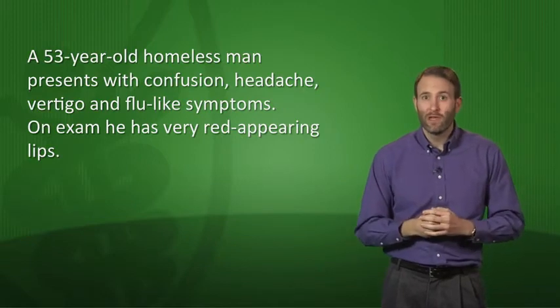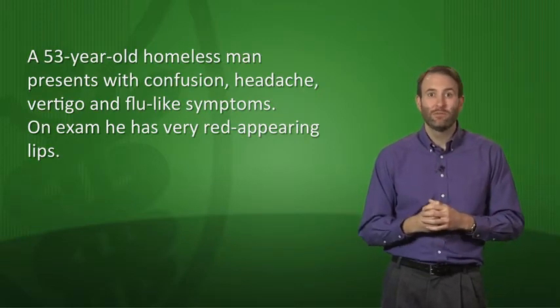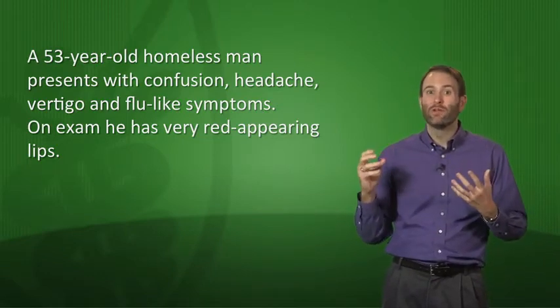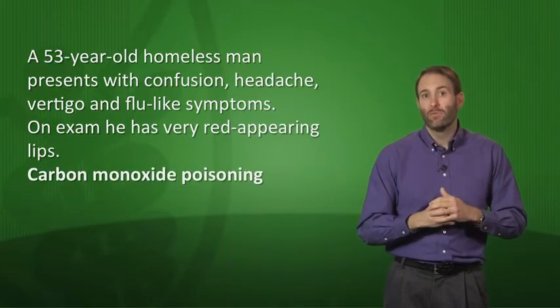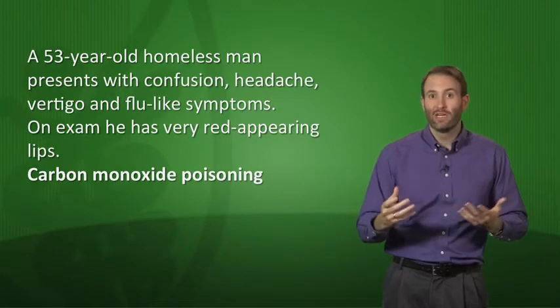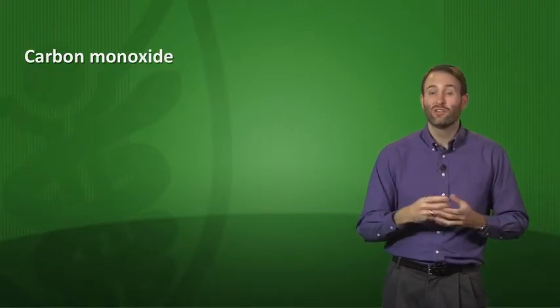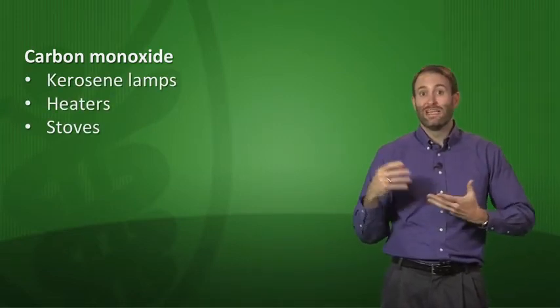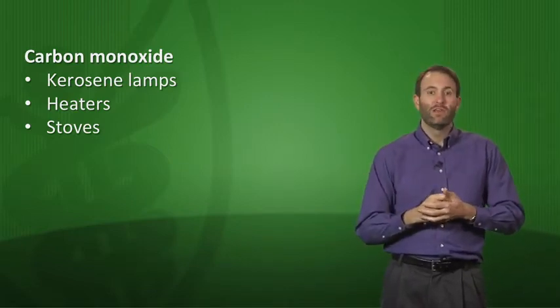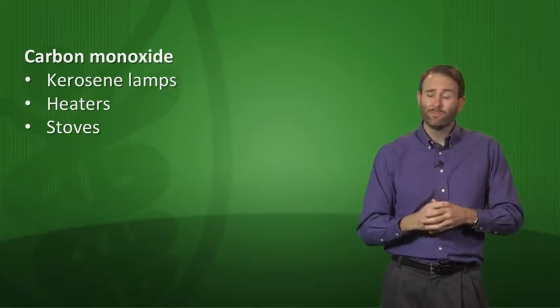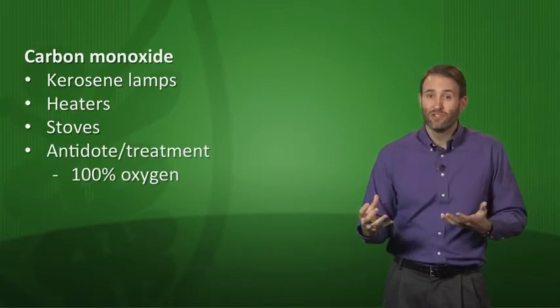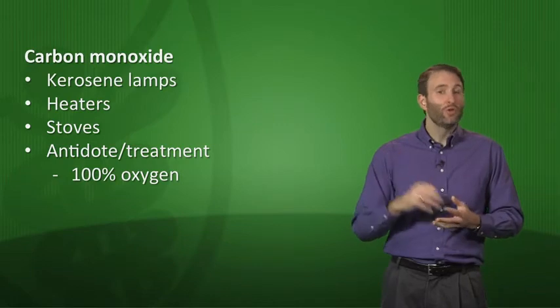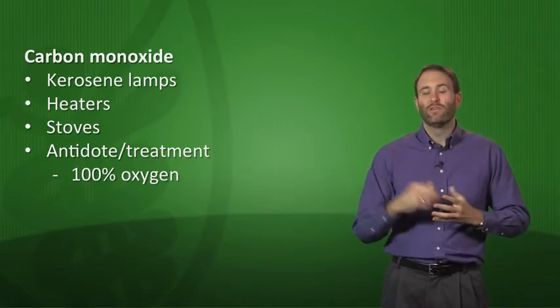A 53-year-old homeless man presents with confusion, headache, vertigo, and flu-like symptoms. On exam, he has very red appearing lips. Not many things can cause that red appearing or sometimes we refer to as cherry red lips. This is going to be carbon monoxide poisoning. How did this homeless man get carbon monoxide poisoning? We often think of house fires or car exhausts, but don't forget about kerosene lamps, heaters, or stoves. Patients, especially if they're trying to keep warm, might be sitting very close to a kerosene heater. How do we treat this? You want to actually give them 100% oxygen. That's a relatively simple antidote. You can try to displace the carbon monoxide off of the hemoglobin. If it's available, you can also use hyperbaric oxygen if you have those available at your hospital.